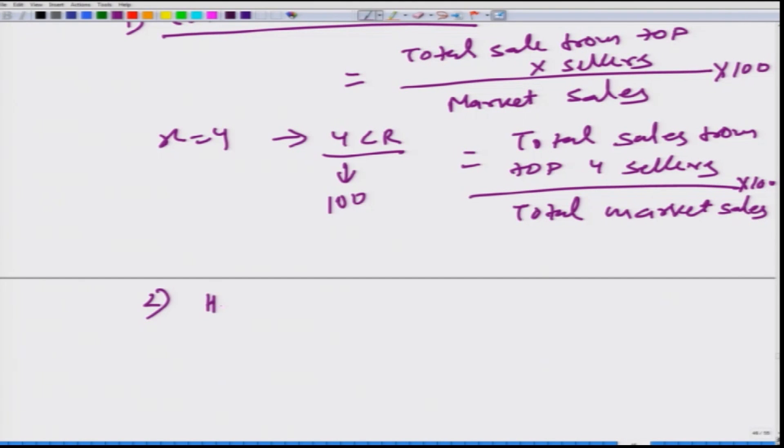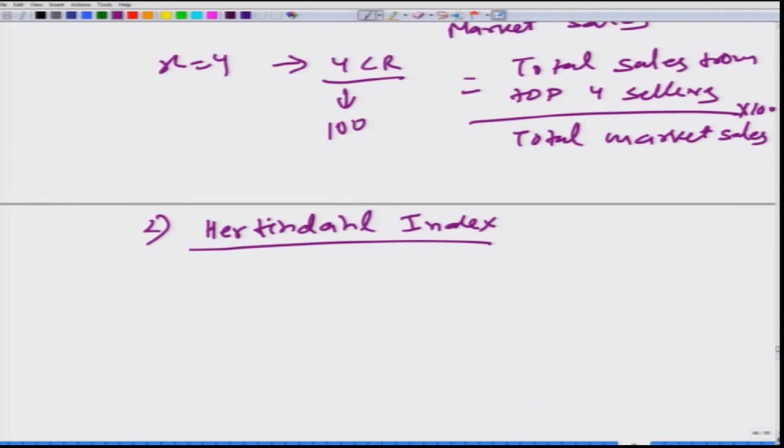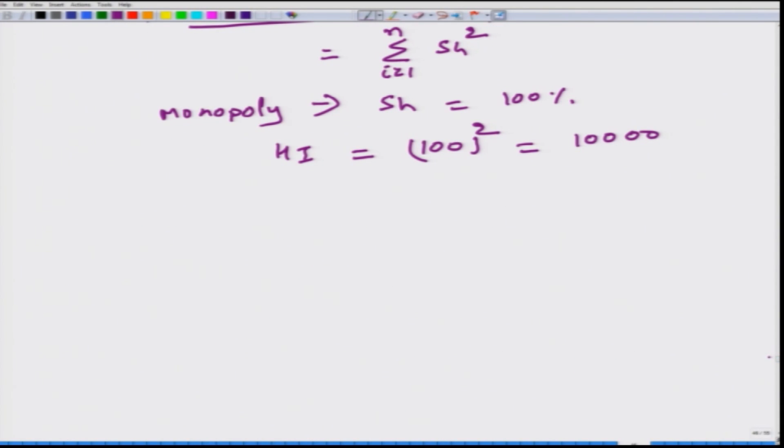And the second is called Herfindahl index. What it does, here we calculate the square of market share of all the firm. So let us say that if we have only one firm in the market, in case of the monopoly. What we have here, the market share that this firm will have 100 percent. So in that case the HI index is going to be 100 to the power 2, which will come out to be 10,000 and this is the maximum value that this index can take.